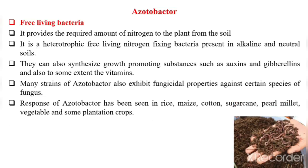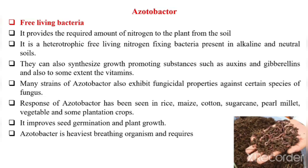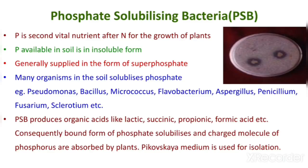The response of Azotobacter has been seen in rice, maize, cotton, sugarcane, pearl millet, vegetables, and some plantation crops. It improves seed germination and plant growth. Azotobacter is the heaviest breathing organism and requires a large amount of organic carbon for its growth.